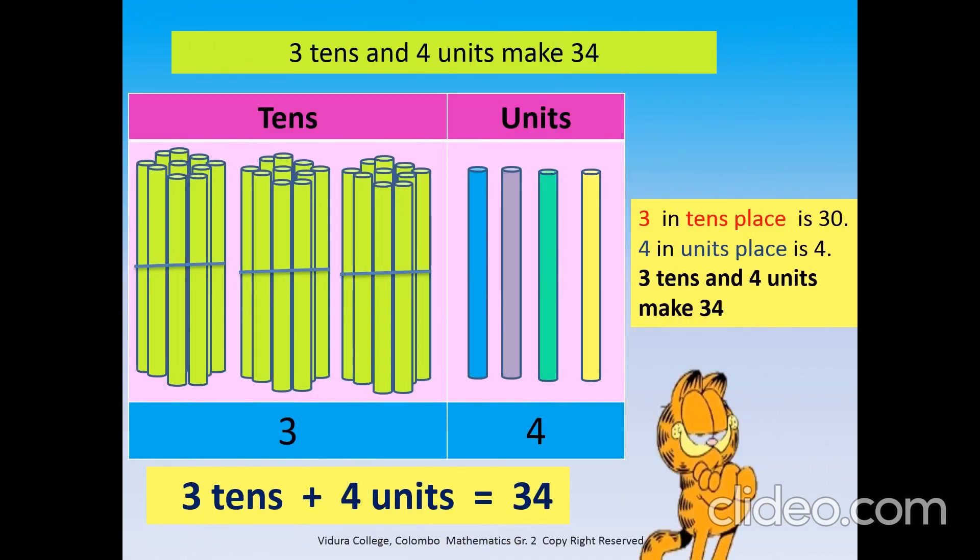Let's see 34 in a chart. There are 3 tens. Three tens in tens space is 30. Four in unit space is 4. Three tens and four units make 34. Likewise, you can find tens and units in a number.